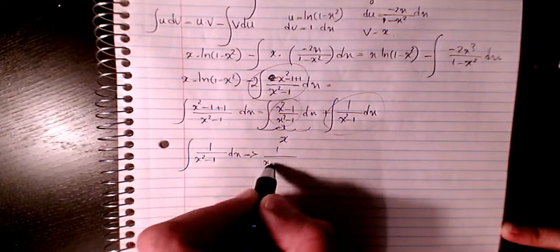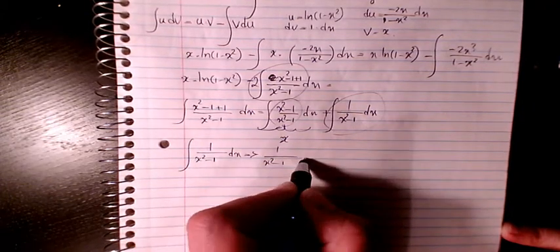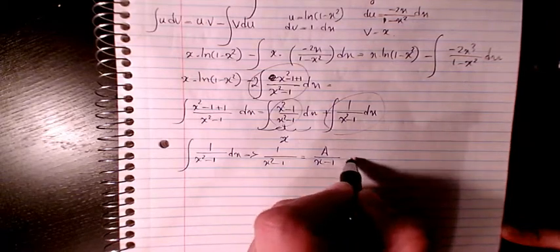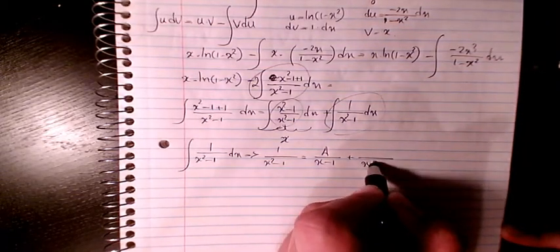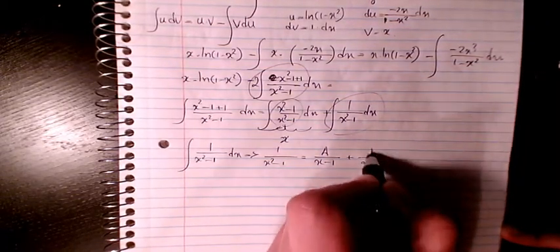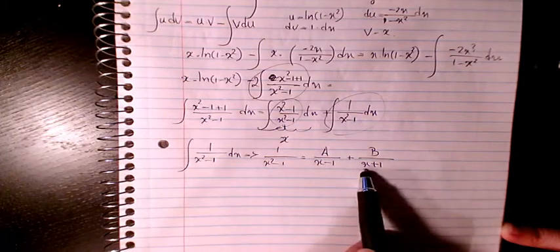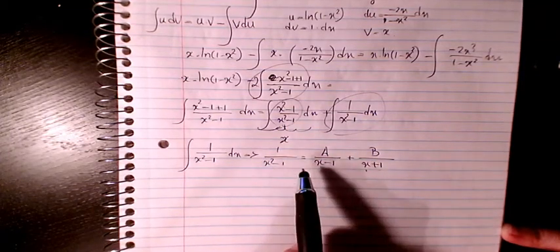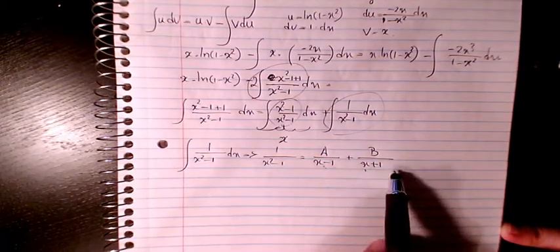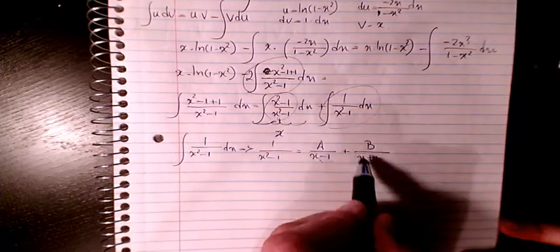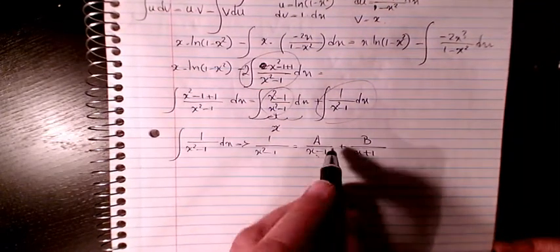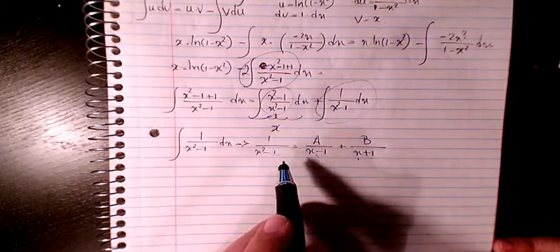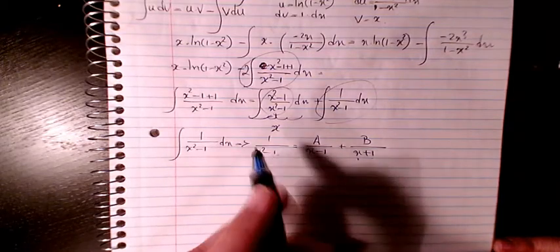For 1 over (x squared minus 1), I'll use partial fractions: A over (x minus 1) plus B over (x plus 1), since x squared minus 1 is a difference of squares equal to (x minus 1)(x plus 1). Multiplying both sides by (x squared minus 1) gives: 1 equals A(x plus 1) plus B(x minus 1).